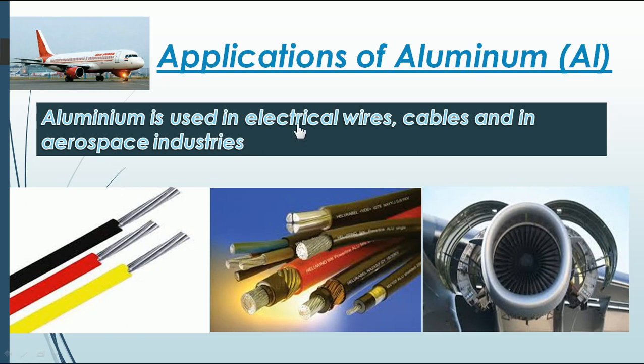Next, aluminium is used in electrical wires as well as cables. These are some of the uses of aluminium. Even your pressure cooker is made up of magnalium, which can hold up high pressure. It is very high in strength, very hard, but light in weight.